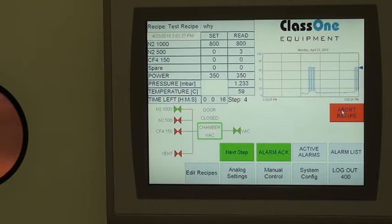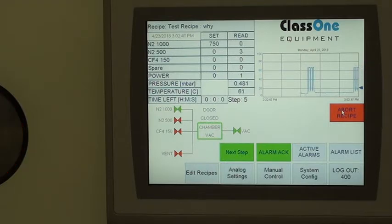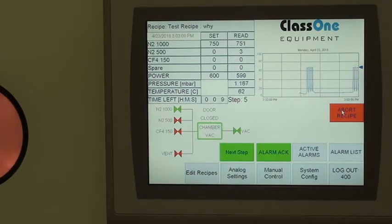Again, our pressure is just controlled by how much nitrogen we flow. So you can next step the recipe. You can see the next step function at the bottom. 10 seconds of RF power. This is RF microwave.